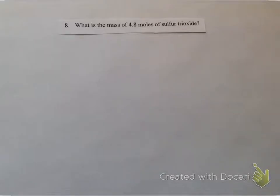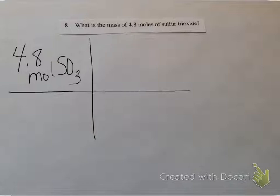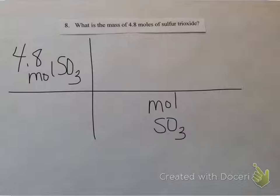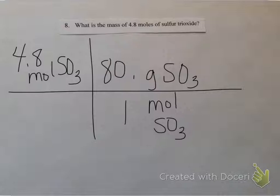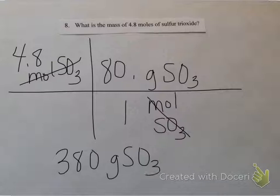Number 8 wants the mass of 4.8 moles of sulfur trioxide, using our covalent naming rules. Down here will be moles of sulfur trioxide, and it's asking for mass, so I can put grams on top since I have moles on the bottom. If I see mole, I put 1. If I see grams, I look up the mass from the periodic table. Sulfur is 32 and oxygen is 16, so 3 times 16 plus 32 gives me 80 grams — the molar mass of SO3. Multiply the top and divide by the bottom, cross out units, and I get 380 grams of SO3. Two sig figs is all I need.